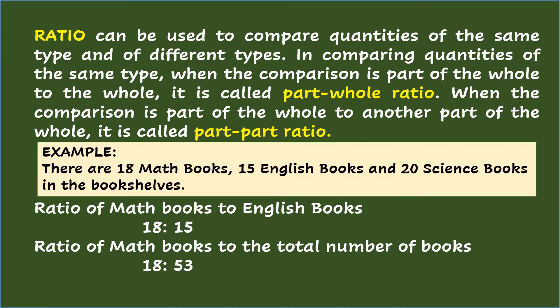Ratio can be used to compare quantities of the same type and of different types. In comparing quantities of the same type, when the comparison is part of the whole to the whole, it is called part-whole ratio. When the comparison is part of the whole to another part of the whole, it is called part-part ratio. Example: there are 18 math books, 15 English books, and 20 science books in the bookshelves.